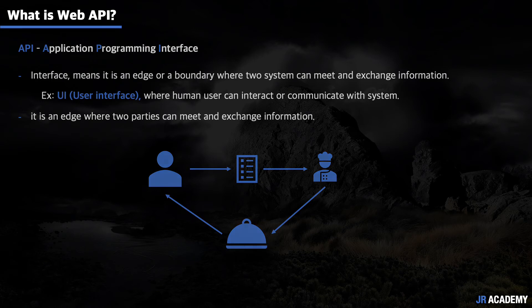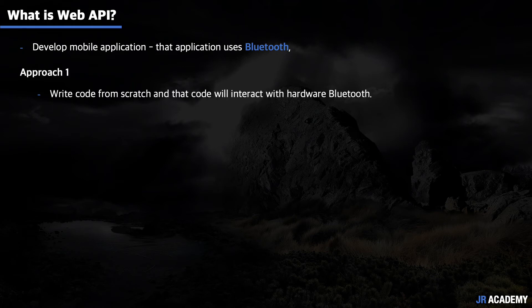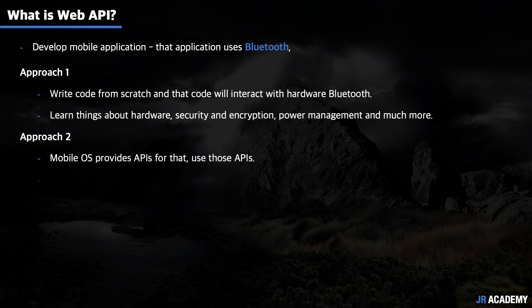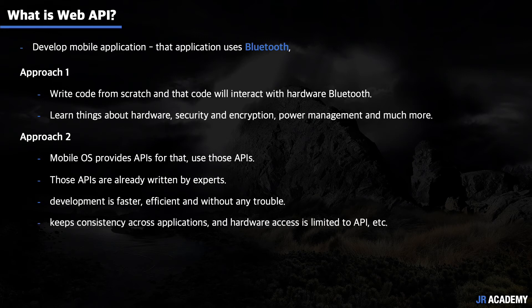For example, imagine you are developing a mobile application that uses Bluetooth. You have two approaches. The first is to write your own code from scratch that interacts with the Bluetooth hardware — for that you need to learn many things like hardware, security, encryption, power management, and many other areas, and you need to be an expert in all of them. The second approach is that the mobile OS provides an API for Bluetooth, and you just use those APIs, which are already written by industry experts. With the second approach, development is much faster, efficient, and trouble-free. There are many benefits, such as consistency across applications and platforms, and it limits hardware access to the APIs only. This is why we say APIs make life easier for developers.